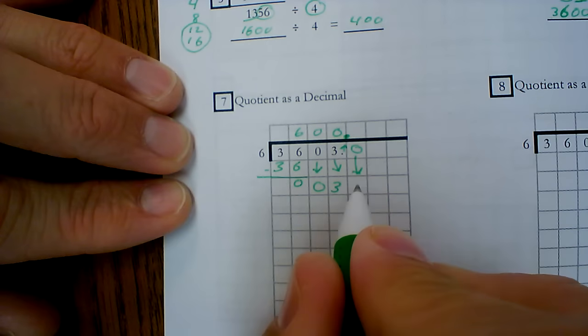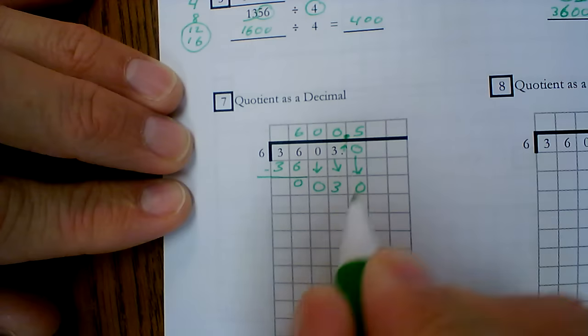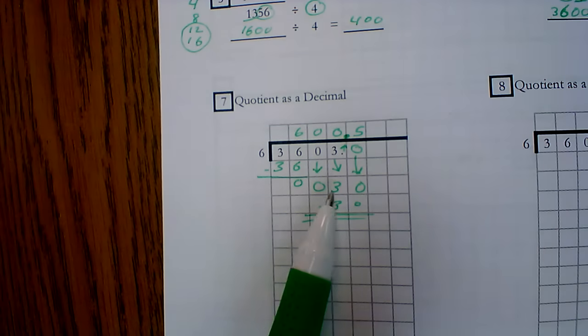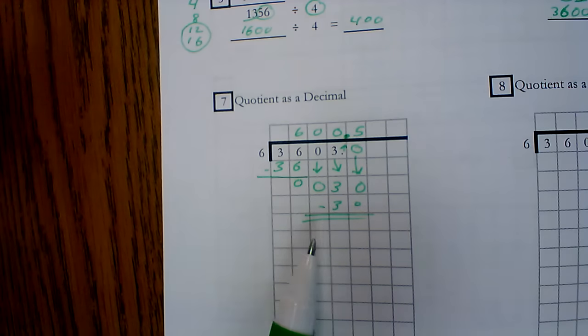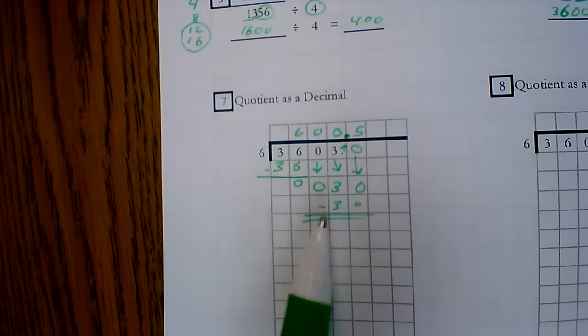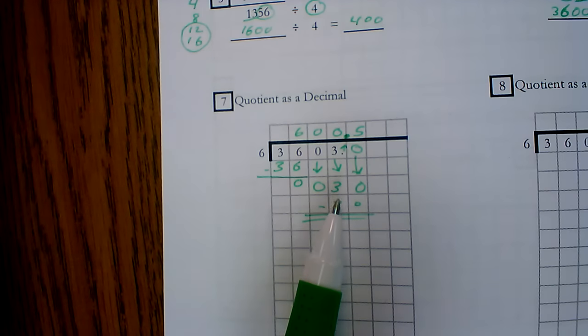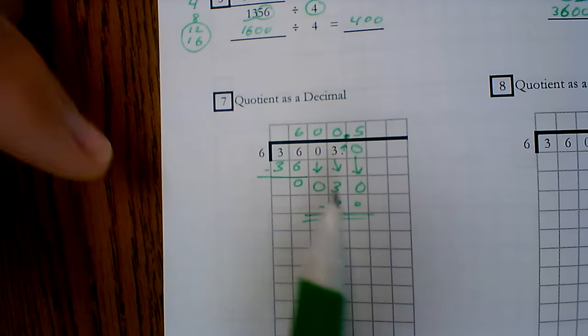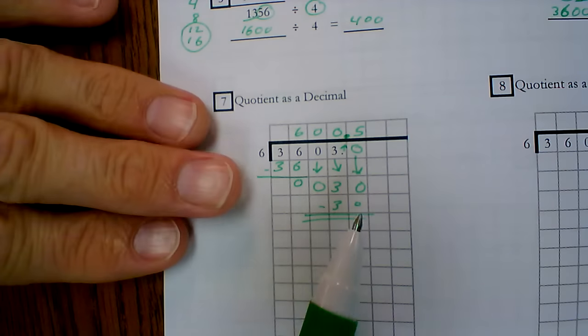Bring the zero down. I get five. Now you'll notice I did not multiply by zero because I know that zero times six is zero. Zero minus zero is zero. Zero minus, or three minus zero is three. So that's why I did not bring it down.